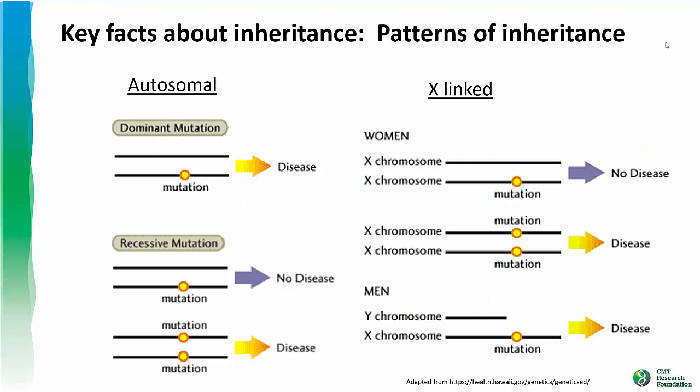Inheritance patterns are also important to consider in CMT. Humans have 23 pairs of chromosomes. In each pair, one is inherited from your mother and the other from your father. One of those pairs is responsible for sex determination and are called the sex chromosomes. Females have two X chromosomes and males have one X and one Y sex chromosome. The X and Y chromosomes encode different genes. The other 22 pairs are called autosomes, and each pair of autosomes contains the same genes, so you have two copies of these autosomal genes.